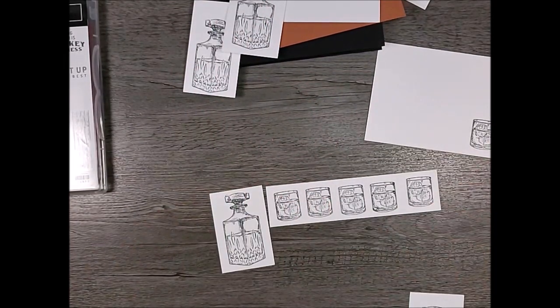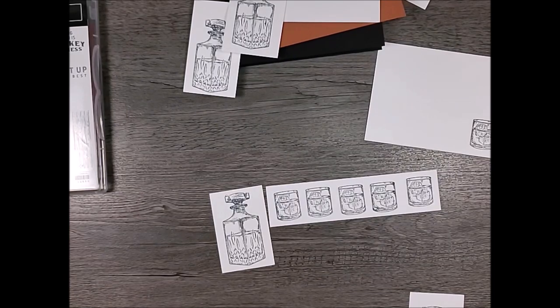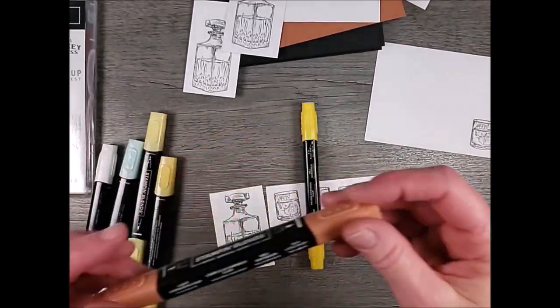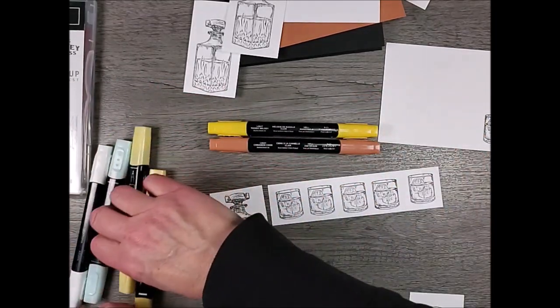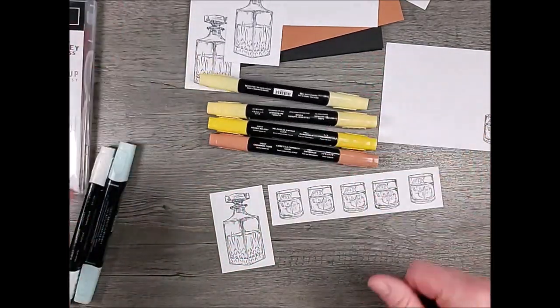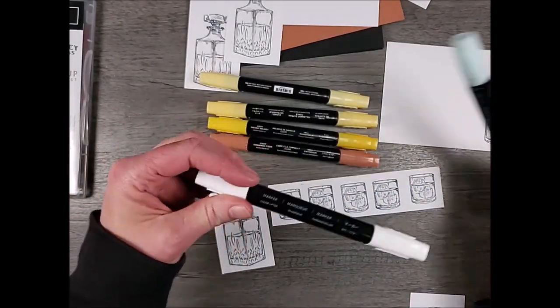So the first thing we're going to do is try to color. So we're going to color one of the decanters and one of the glasses and then this glass from the inside. So these are the blends that I'm going to use. I have a light cinnamon cider, a light mango melody, a light and dark saffron, a light pool party, and then the color lifter.